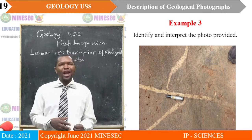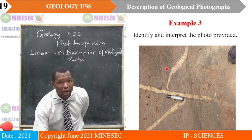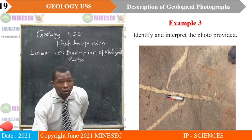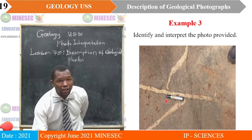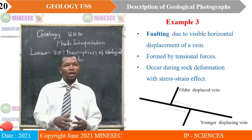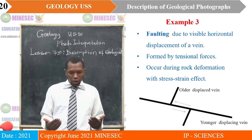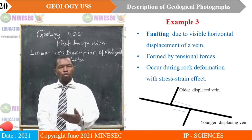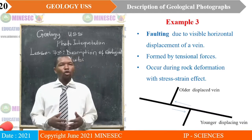Example three: identify and interpret the photograph provided. If you look at this photograph, you realize there is a structure that looks like a fracture that has been refilled, and another such structure. One of the structures is displacing the other — there is visible displacement. When there is visible displacement, it is faulting. In the field, horizontal displacement should be on the floor of the rock body, while vertical displacement should be on the wall. They are most likely formed by tensional forces.